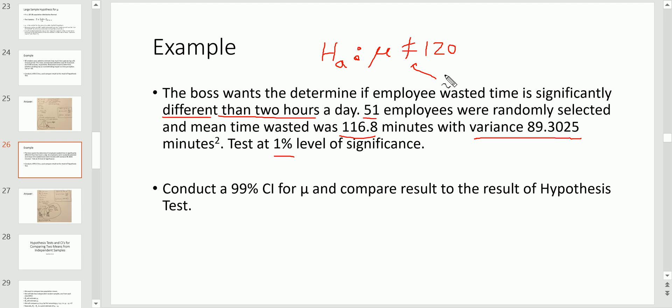The question here is: the boss wants to determine if employee waste of time is significantly different than two hours, which is 120 minutes. Immediately what needs to be tested, and which is going in the alternative hypothesis, is that the average wasted time is different than 120. This right here opens up the door and tells me that this is going to be a two-sided or two-tailed test. Since I'm doing tests for the mean I'm going to be using the t distribution since I don't know sigma. Therefore I'm going to use the cutoff method and I'm going to have rejection regions. In other words, two-sided test, two rejection regions.